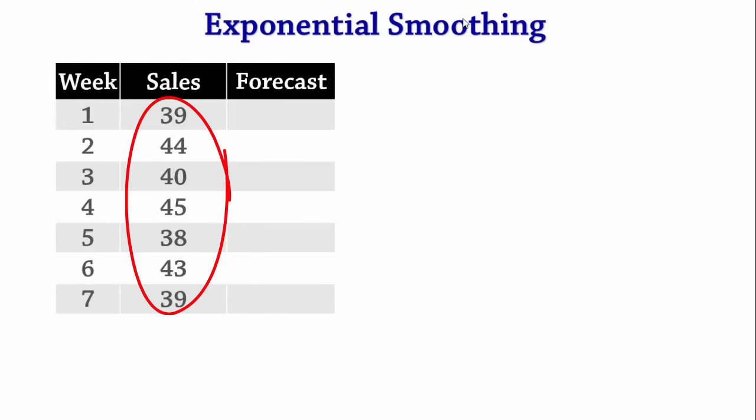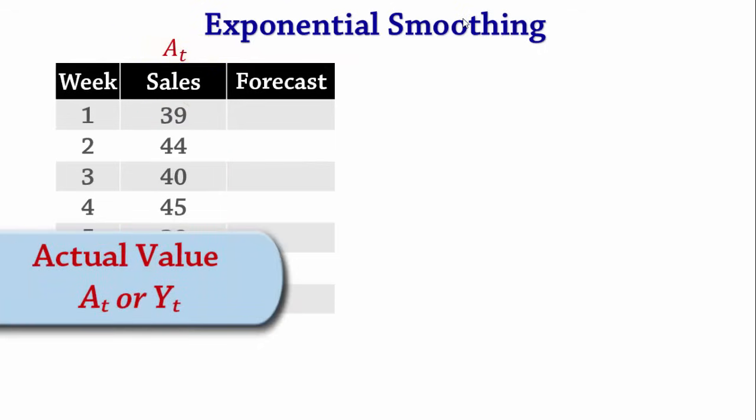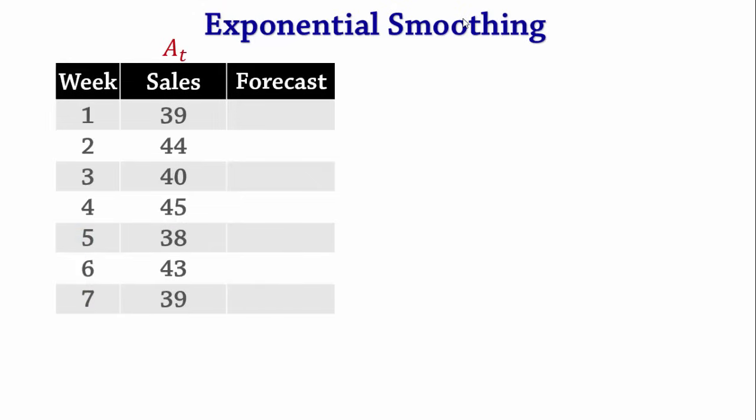The actual sales will be represented by AT. Note that some authors use YT to represent actual values. Forecast values, on the other hand, are generally represented by FT.